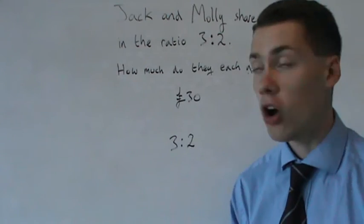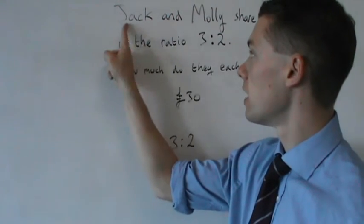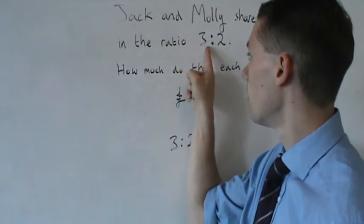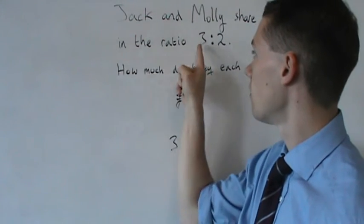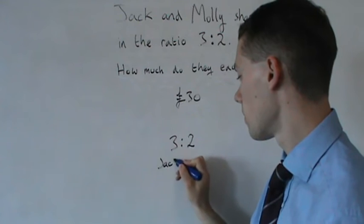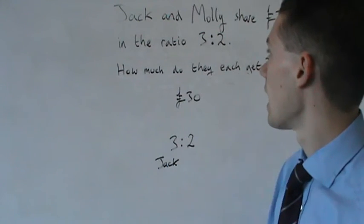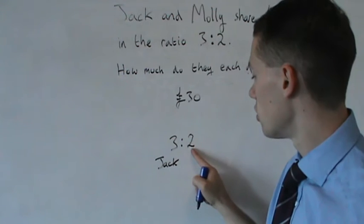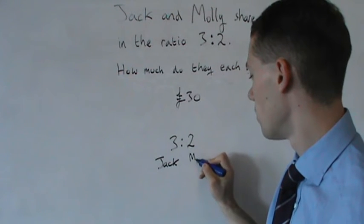Now, because Jack is the first person mentioned, he's this first number of 3. Jack is the first person, so he's 3 here. And Molly is the second person, so she is the 2 here. This is Molly.